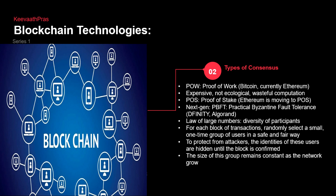There is a next-gen consensus called Practical Byzantine Fault Tolerance, and coins like Dfinity and Algorand come under that. In blockchain you need a large number of participants. For each block of transactions, it randomly selects a small group of people in a safe and fair manner — it's not necessary that I and my set of friends will be selected, to avoid lobbying. To protect from attackers, the identities of every person are hidden until the block is confirmed, because otherwise someone could be bribed. The size of the group remains constant as the network grows.